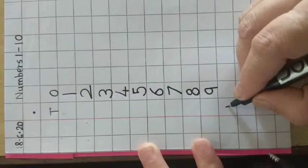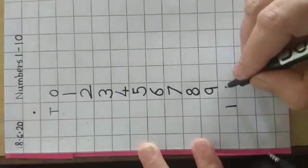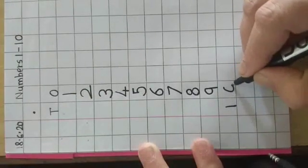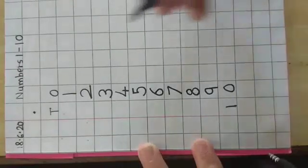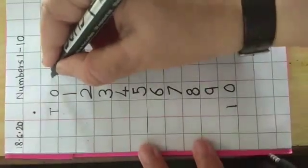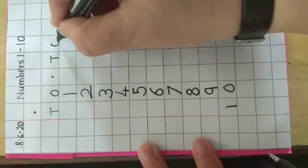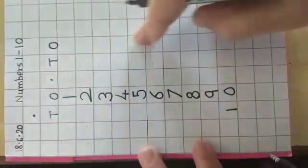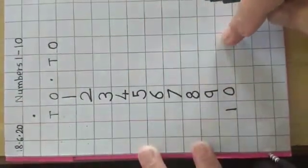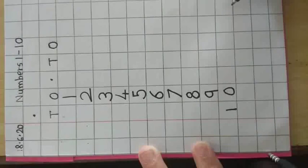Number 10: 1 standing line and 0. Now leave the line and write down T, O. And here, you are going to write down 1 to 10. Do the practice of writing 1 to 10, 4 times.